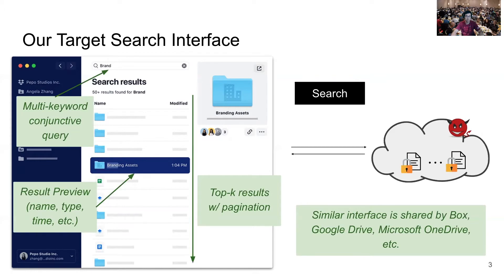We first identify the target search features by surveying popular cloud storage services such as Dropbox. Dropbox supports multi-keyword conjunctive queries and returns the top relevant results with pagination, allowing users to click a page or scroll down for more results. Instead of returning the full document, they return a preview including the name, type, and time of the document. We want to replicate such search features but with end-to-end encryption.